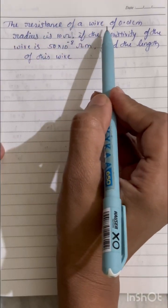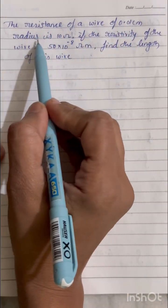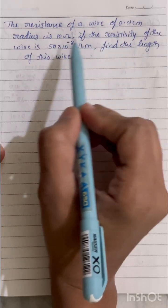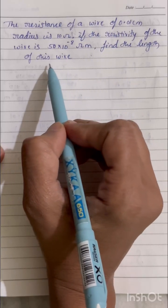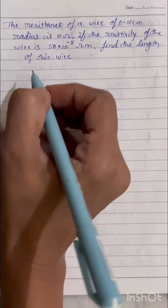The resistance of a wire of 0.01 centimeter radius is 10 ohm. If the resistivity of the wire is 50 into 10 power minus 8 ohm meter, find the length of this wire. So basically in this question they're asking us to find out the length.